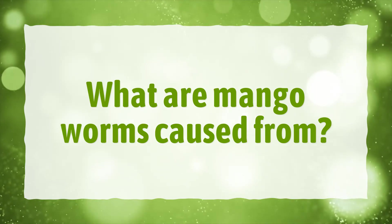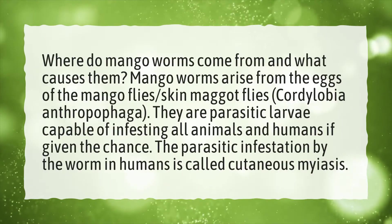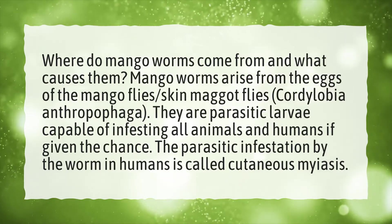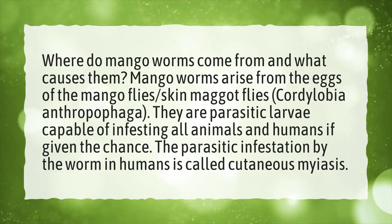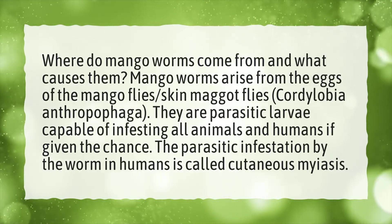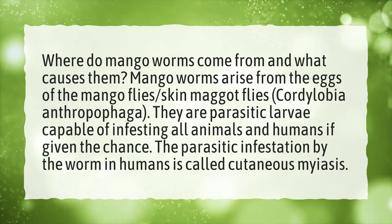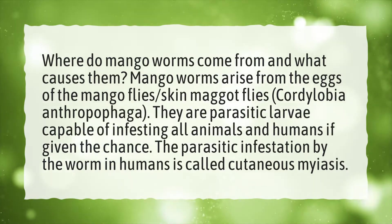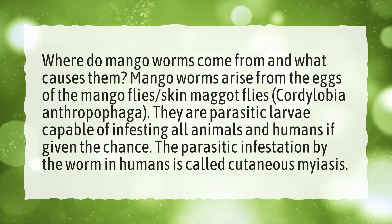What are mango worms caused from? Where do mango worms come from and what causes them? Mango worms arise from the eggs of the mango flies, also known as skin maggot flies, Cordylobia anthropophaga. They are parasitic larvae capable of infesting all animals and humans if given the chance. The parasitic infestation by the worm in humans is called cutaneous myiasis.